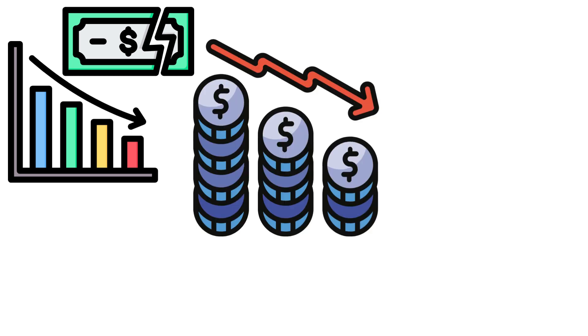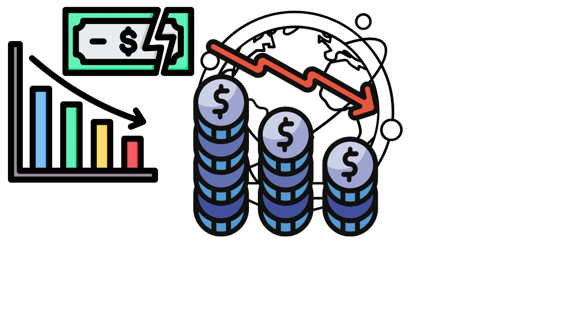The Wall Street Crash is often considered the catalyst for the Great Depression, a prolonged period of economic downturn that lasted throughout the 1930s. The effects were global, with economies worldwide experiencing the ripple effects of the crash.